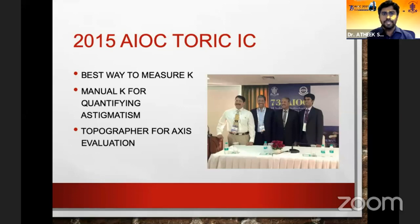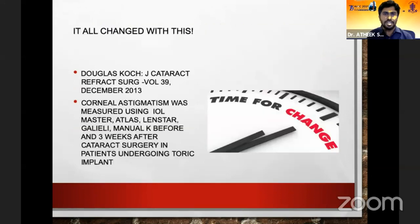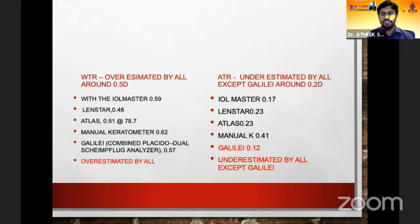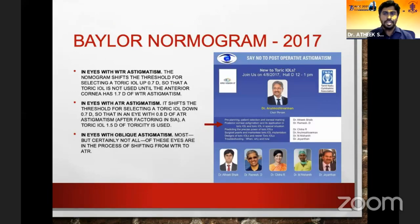When we started this instructional course in 2015, manual K was considered good enough for toric implants, and topography provided reasonably good axis evaluation. But just as physical conferences have become history, so has that approach. It all changed with the landmark work by Dr. Douglas Koch, who established the significance of posterior corneal astigmatism and introduced the Baylor nomogram. By 2017, we included PCA as the way forward for toric implants.